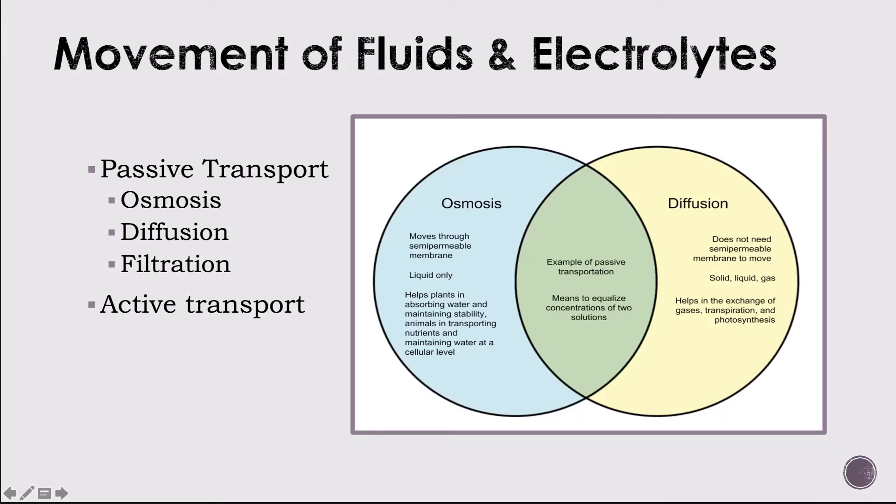The movement of fluid and electrolytes involves passive transport, which requires no energy. It includes osmosis — movement of water across a cell membrane from less concentrated to more concentrated solution; diffusion — molecules move through a membrane from higher to lower concentration; and filtration — movement of water and smaller particles from high pressure to low pressure.